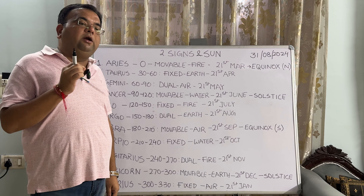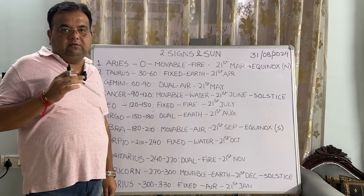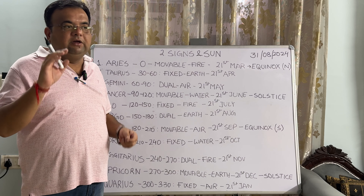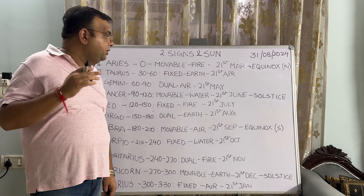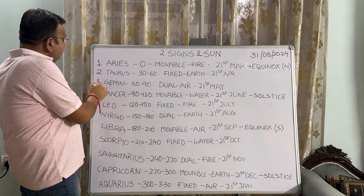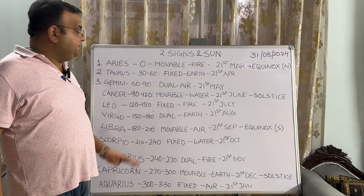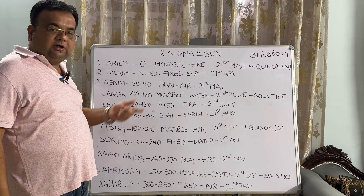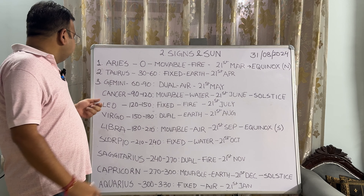In astrology, the starting point is always very, very important. We focus mainly on the starting point rather than the rest of the journey. The third sign is Gemini. In the zodiac it is spread between 60 degrees to 90 degrees, dual in nature, and the sun enters into Gemini on the 21st of May.